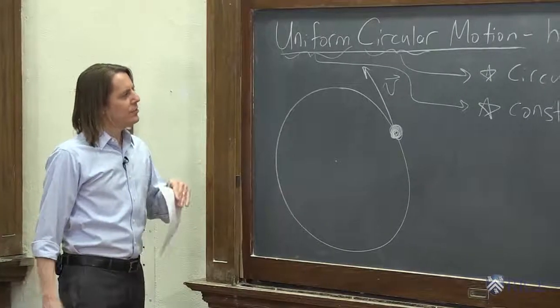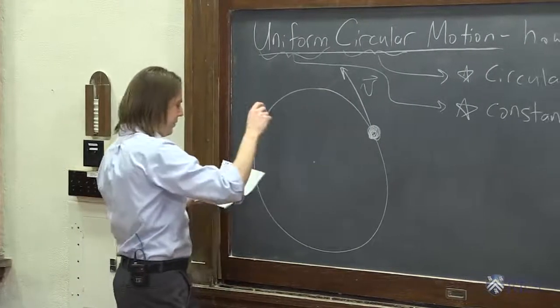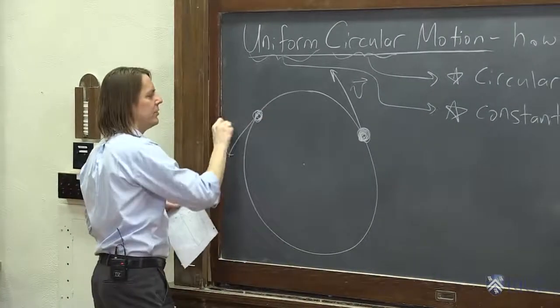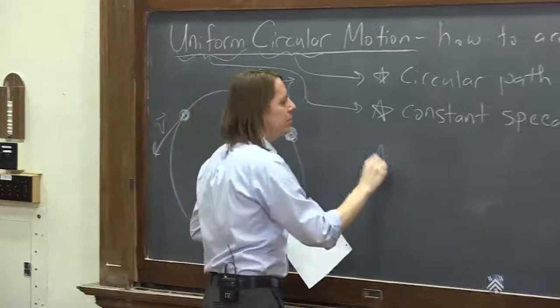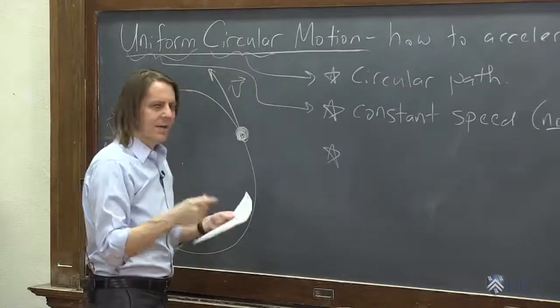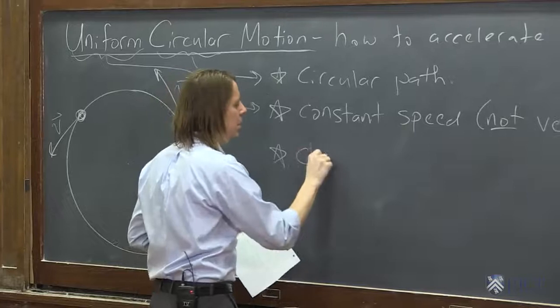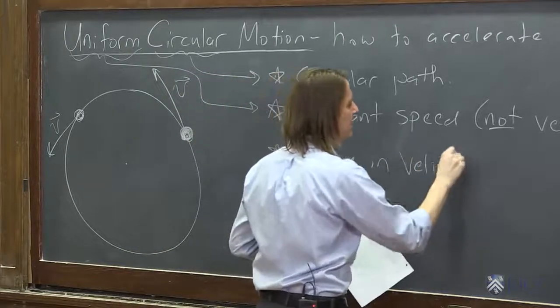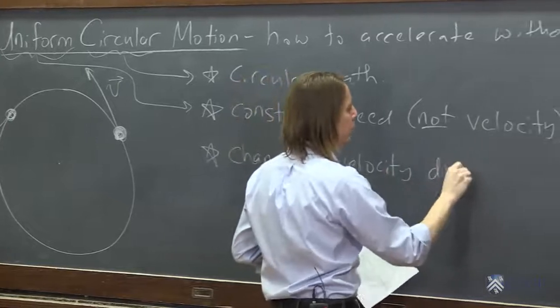So what is interesting, though, is here the velocity vector looks like that. Here the velocity vector looks like this. So what we can conclude is that there's a change in velocity direction.